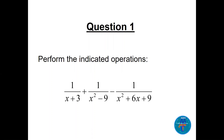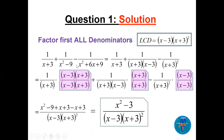Question 1: perform the indicated operations. We have an expression to add and subtract, so we factor each denominator and find the LCD. Factoring gives us (x-3)(x+3) and (x+3)² as a perfect square. The LCD will be each factor raised to the highest power: (x+3)² (x-3). We then multiply each fraction up and down to get a common denominator.